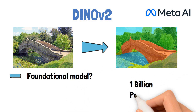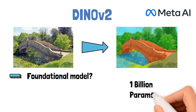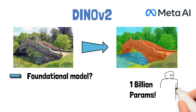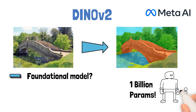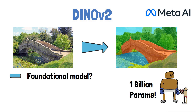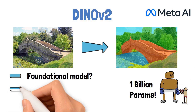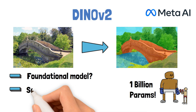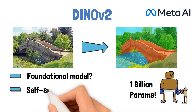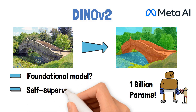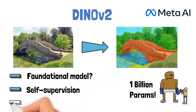DynoV2 is a huge model with 1 billion parameters, and this comes with its challenges, both for training the model and using it. We'll talk about some of these challenges and what Meta AI has done to overcome them using self-supervision and distillation.